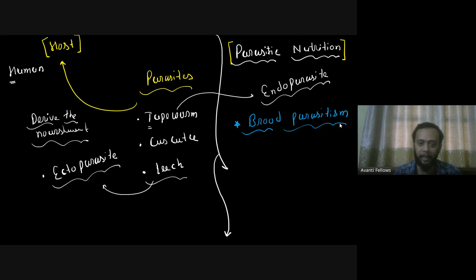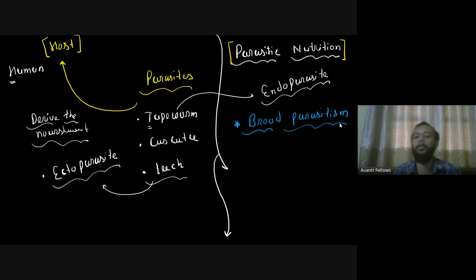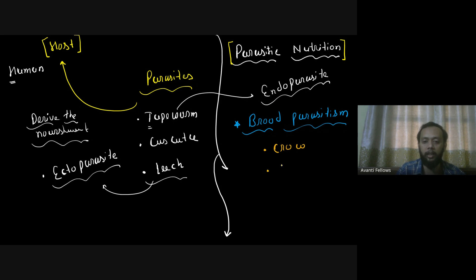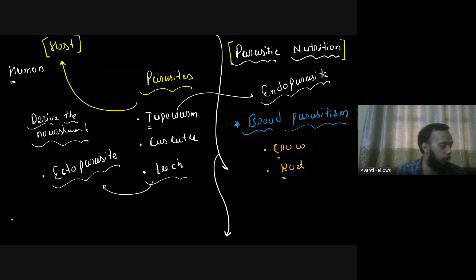Once the coel chick hatches, it pushes the other eggs or chicks out of the nest. The reason is resource competition — when the mother bird brings food, by pushing the siblings out, all the food goes to the coel chick alone. This is instinctive behavior to get all the nourishment from the parent.